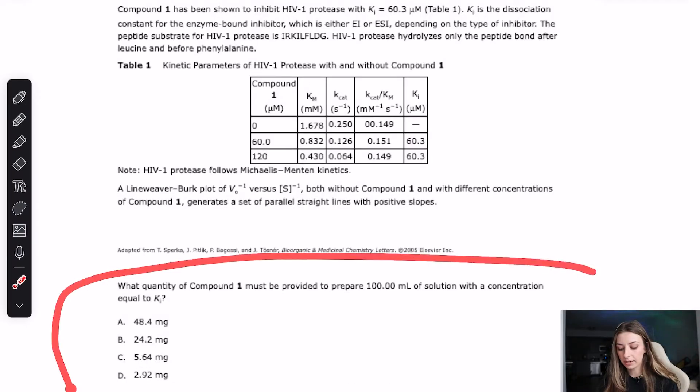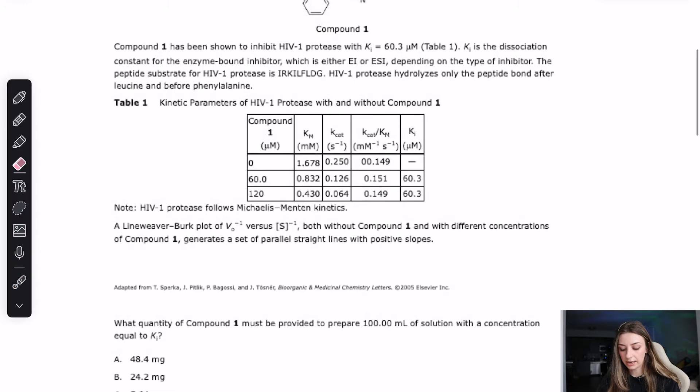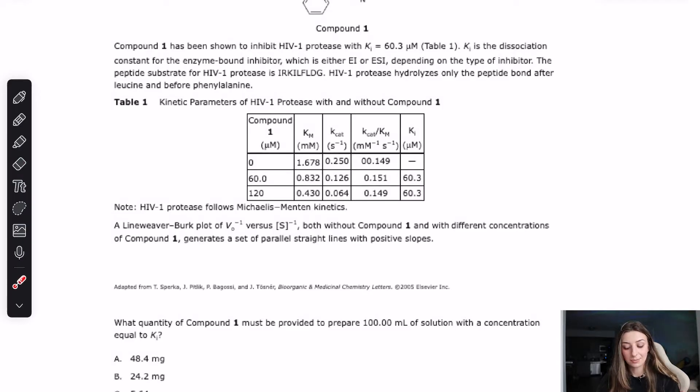So I have question number one right here. Question number one says, what quantity of compound one, which is this right here, must be provided to prepare 100 milliliters of solution with a concentration equal to Ki? So I hope you guys read the passage, honestly, because this is impossible to do unless you read the passage. So if I was going through and reviewing this question after I took it, and let's say I got it wrong, the first thing I'm going to ask myself is, did I understand what the question was asking of me? Because if you've done this question or if you've read it or thought about it, this is really not that bad of a question, but it's asked in kind of a convoluted way, which is the MCAT special.